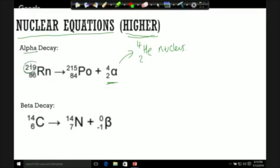If you've got a mass of 219, you are going to lose a mass of 4, so the element that you make must have a mass of 215. Again, the proton number is going to decrease by 2 because you are getting rid of that alpha particle that has 2 protons. Therefore, your proton number is going to be 84.